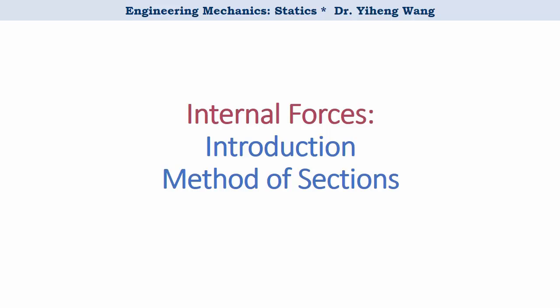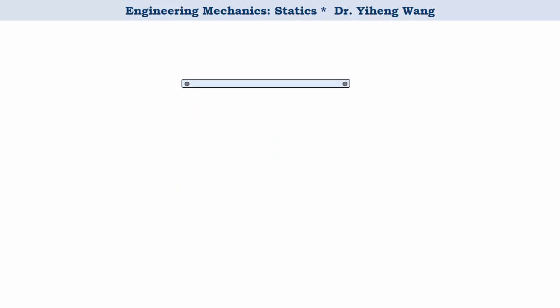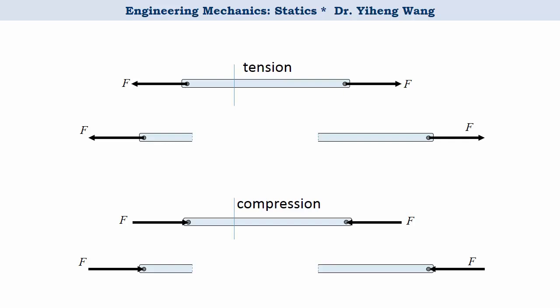We've already learned about internal forces when we studied simple truss analysis. For a truss member with forces acting on it, the member could be in tension or compression. Although forces only act on the two ends, force must also develop inside the member because we can run an imaginary cut at any place through the member, and each segment must be in force equilibrium according to Newton's first law. These forces are internal forces exerted by neighboring materials to keep the segments from falling. This is a simple example, and we're about to learn more complicated cases.